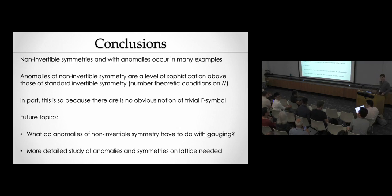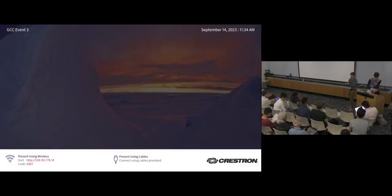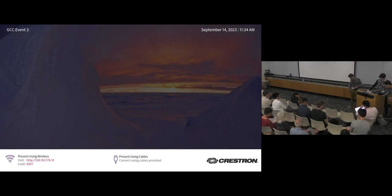A question about terminology: why call it spontaneous symmetry breaking when you're tuning a temperature — isn't that explicit breaking? No — I was talking about the first-order transition in the lattice example. At that point there are two ground states of equal energetic importance: one supports a ZN gauge theory and the other is completely trivial. The natural ground state is not invariant under the action of D — that's the spontaneous symmetry breaking.